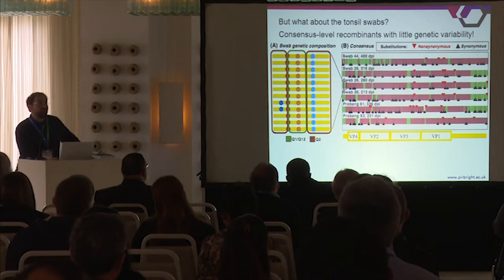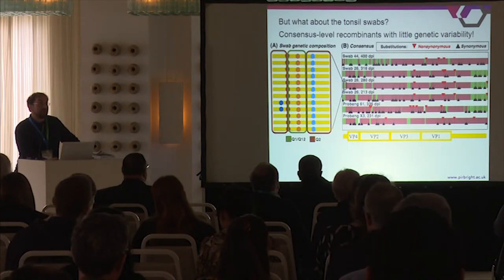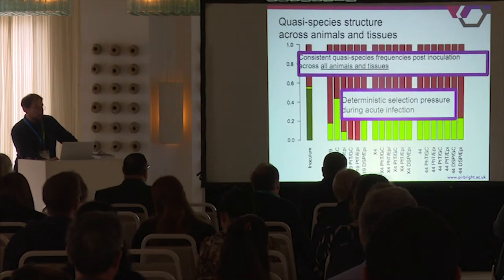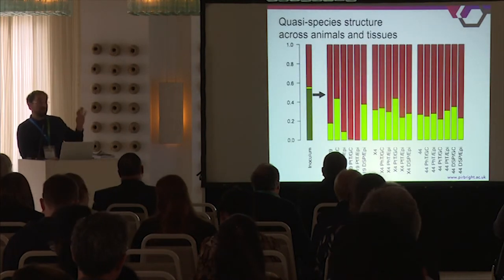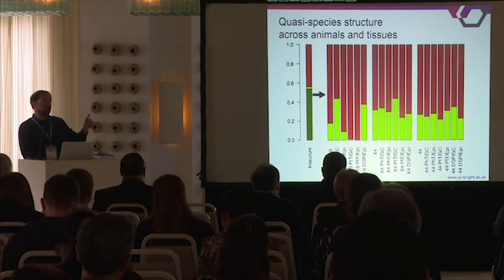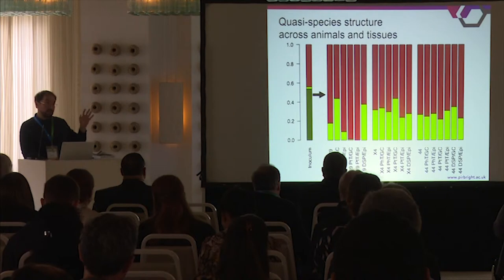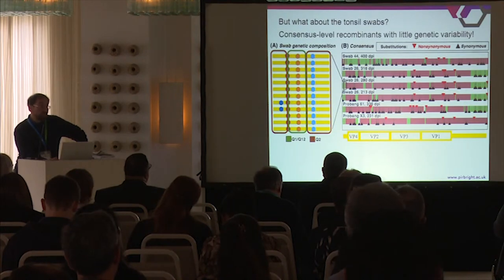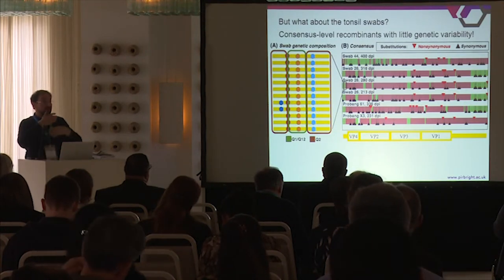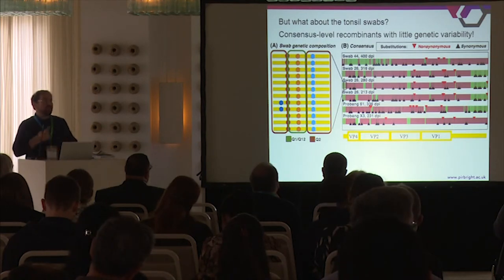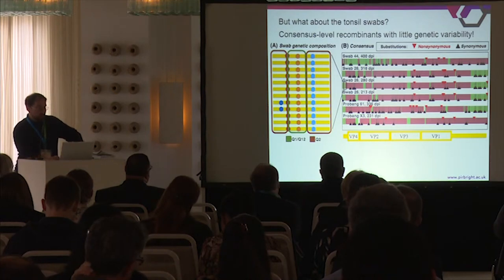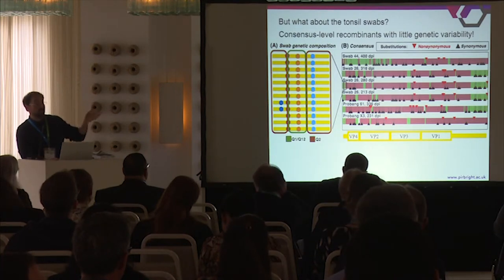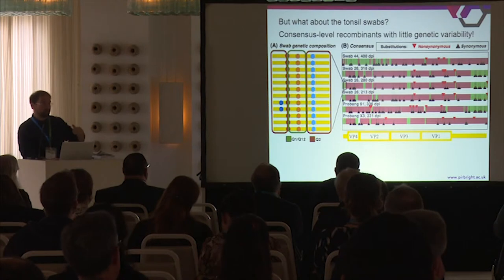This would be a nice result, but the story is much more complicated. Tonsil swabs have been surprising enough. The frequencies illustrated here are for laser microdissections taken from palatine pharyngeal tonsils and dorsal soft palate. The swabs taken from the pharyngeal tract, instead of being a mixture in terms of composition of the two quasi-species, were represented by a single recombinant with little genetic variability. The green and brown illustrate the composition of the recombinants in terms of the two original quasi-species.